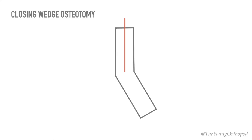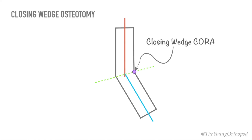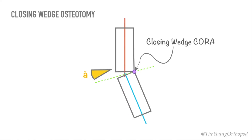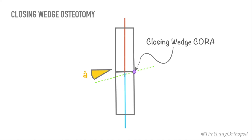The point at which the transverse bisector line intersects the concave cortex is called the closing wedge CORA. If the osteotomy and the ACA pass through this point, a closing wedge correction results. The closing wedge osteotomy requires removal of bone to allow angular correction, and there is full bone-to-bone contact at the end of the correction. The final length of the bone is shorter than in the opening wedge type and equals the length of the concave cortex.